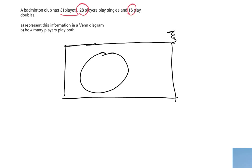And we sketch two circles in it. Again, you don't have to use a compass or anything like that, as long as it's clear what you're doing. I'm going to call this circle S for singles and that circle D for doubles.